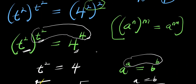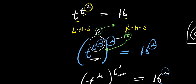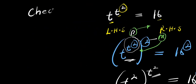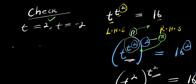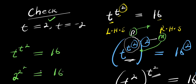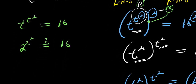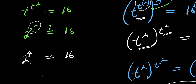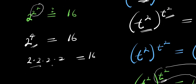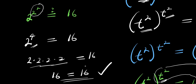The next step is to insert each of these values and check if they satisfy the original equation. Let's start with t equals 2. We have t to the power of t to the power of 2 equals 16, so we insert 2: we have 2 power 2 power 2. We consider the top exponent first: 2 power 2 is 4, so we raise 2 to the power of 4. And 2 to the power of 4 is 2 times 2 times 2 times 2, which equals 16. This equals 16. ✓